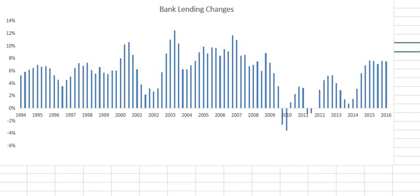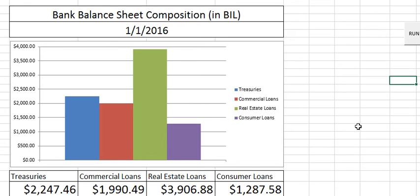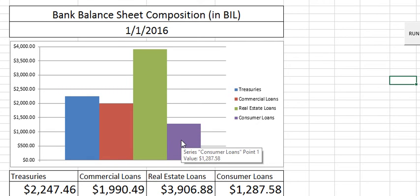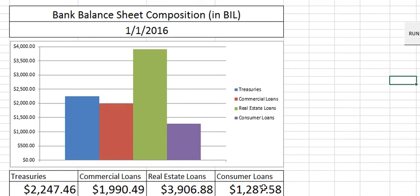Now I want to show you another chart — this is the first quarter of 2016. Bank lending data is split into four different types: Treasuries (U.S. Treasury debt), commercial loans, real estate loans, and consumer loans. Right now, commercial banks are holding about $2.2 trillion in treasuries, just under $2 trillion in commercial loans, just under $4 trillion in real estate loans, and close to $1.3 trillion in consumer loans.